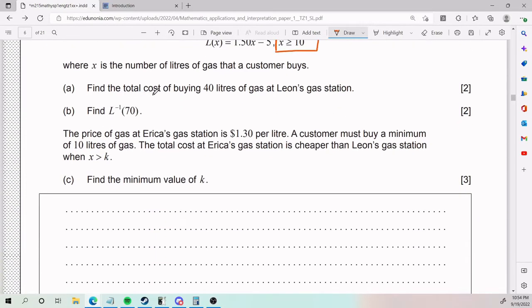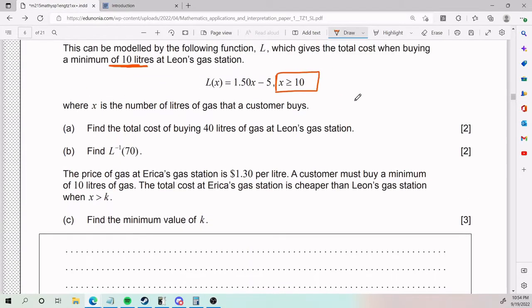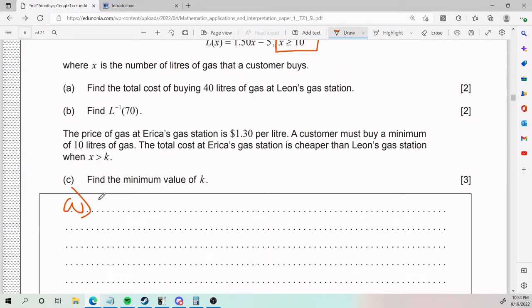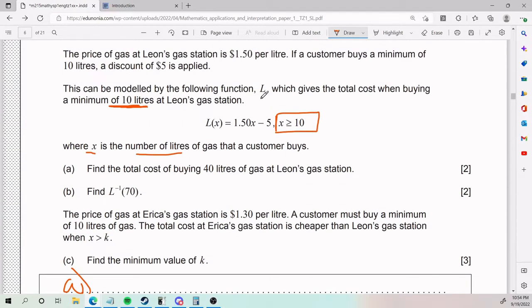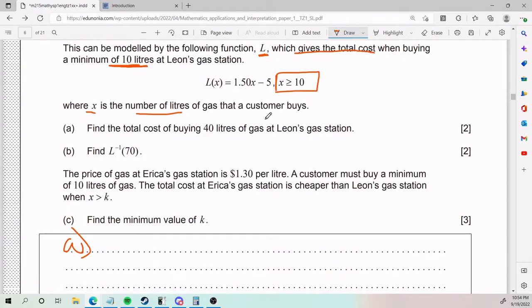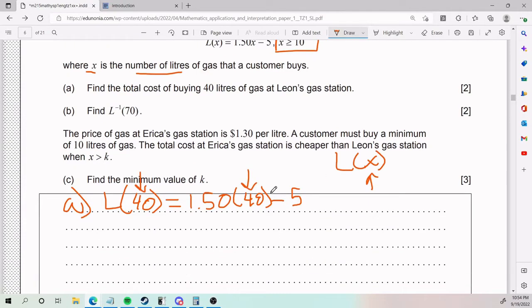Part A: Find the total cost of buying 40 liters of gas at Leon's gas station. Pretty easy. If X is the number of liters, then what is total cost? Well, total cost is L because they tell us that L gives the total cost. This one is pretty straightforward. L(40) equals 1.50 times 40 minus 5. Any time they say L of X and you plug in a number for X, that's what it's telling you.